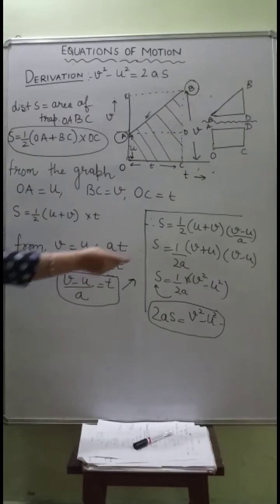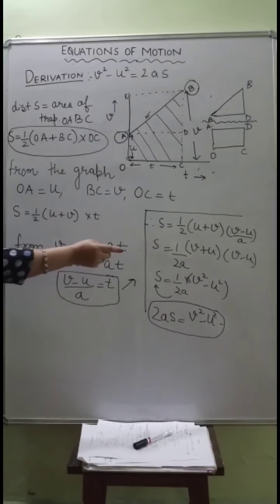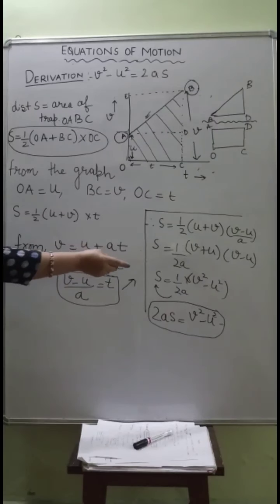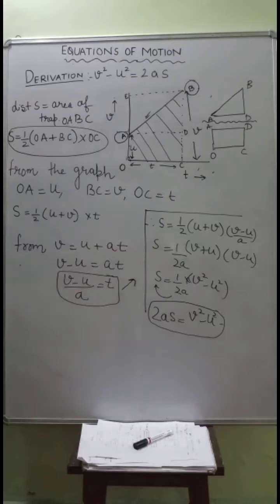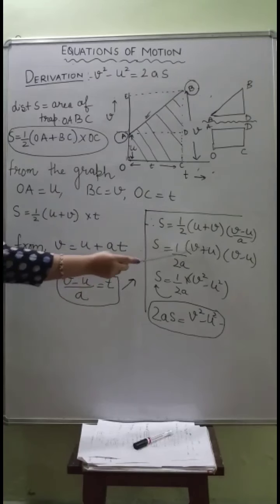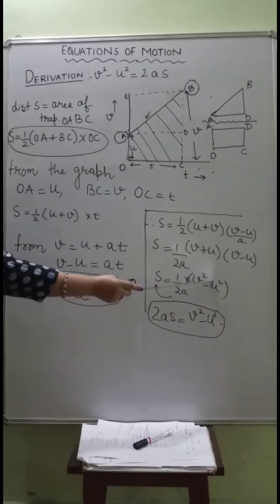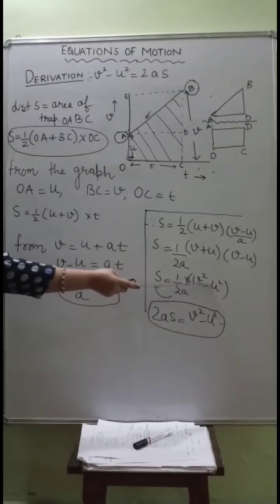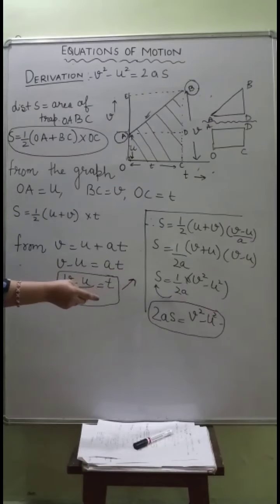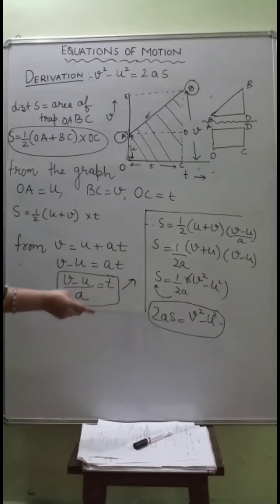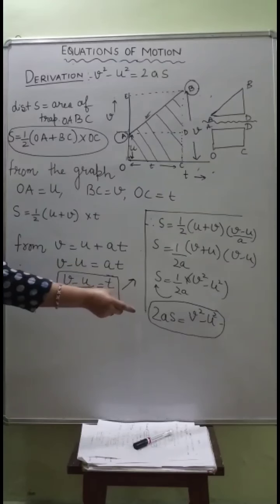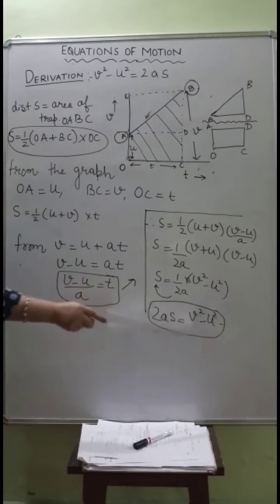Rearranging: 2a × s = (v + u)(v - u). Applying the algebraic identity (a + b)(a - b) = a² - b², this becomes 2as = v² - u². So the third equation of motion is v² - u² = 2as. This completes the derivation of all three equations of motion.